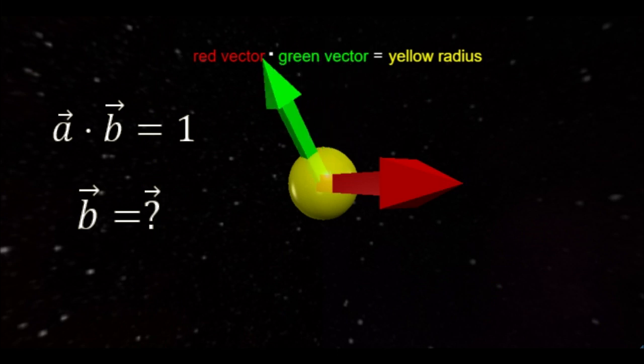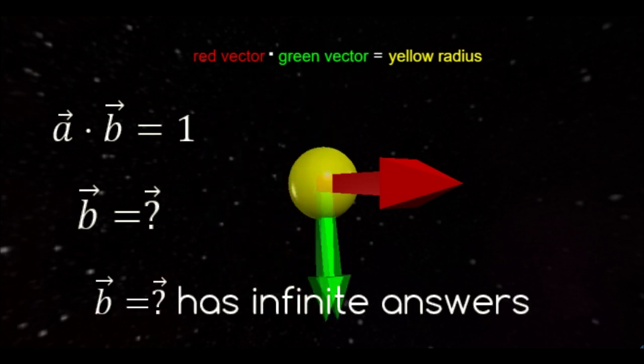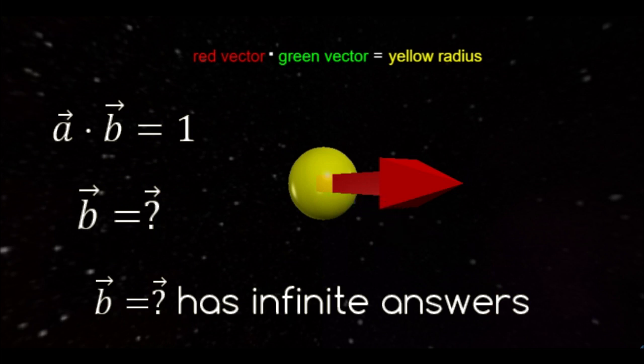There are, in fact, an infinite array of vector b's that will solve this equation, since the dot product only cares about the components that a and b have in common. Vector b can have any x component that we pick and still give the same dot product.